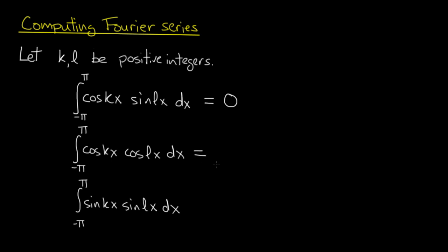The second one depends on k and l, so I break it into two cases. The case in which k is not equal to l, I get zero. The case in which k equals l, I get π. Same goes for the third integral. I get zero if k is not equal to l, and π if k equals l.